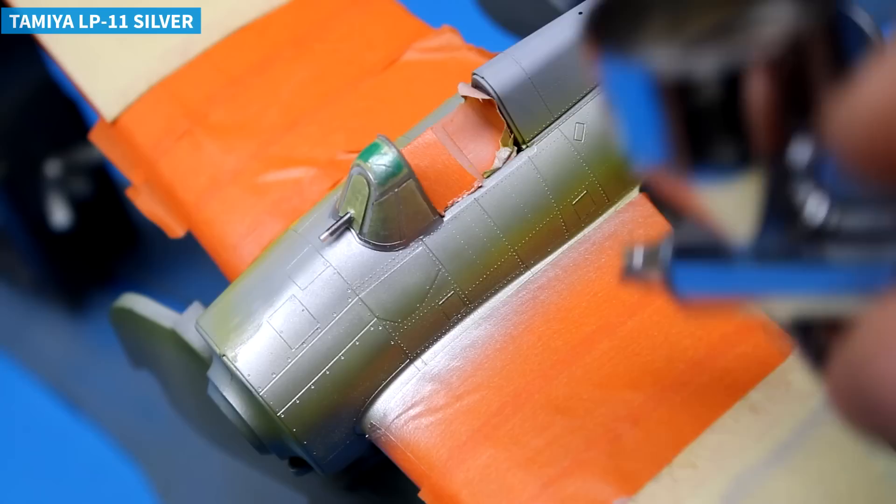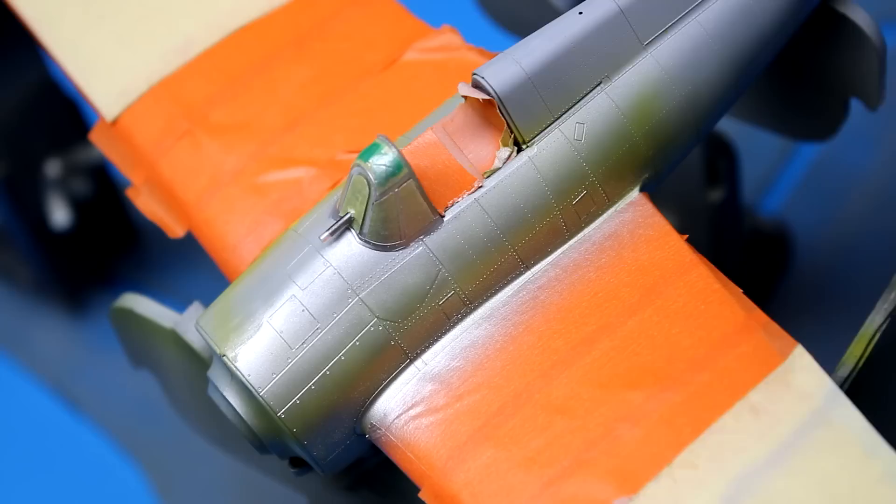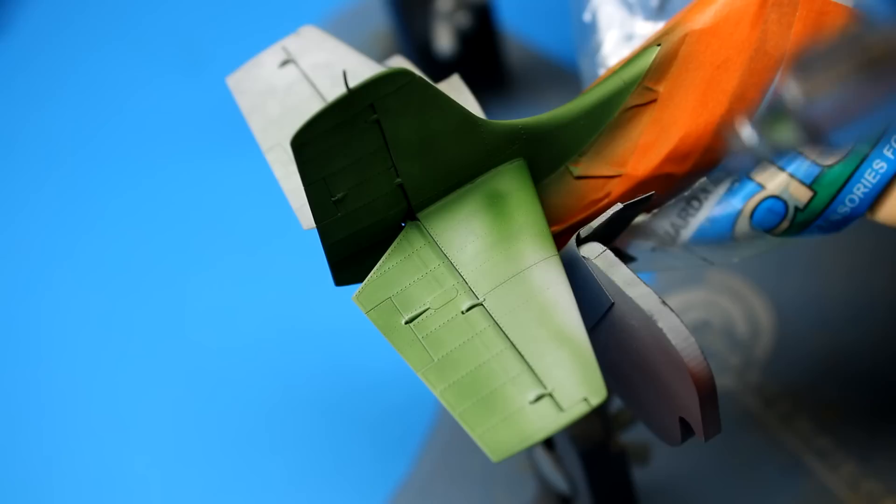With the wings now dry I masked them off and moved on to painting the fuselage with Tamiya LP 11. I found that it had a little bit more shine to it than the Mr. Color 8 making it perfect for the fuselage.